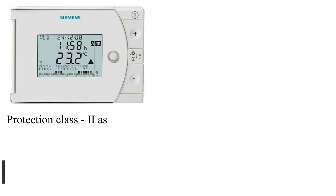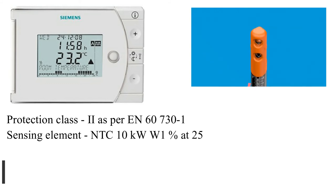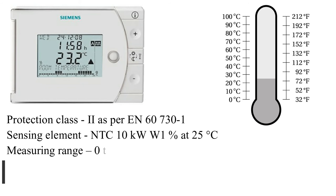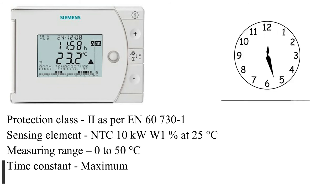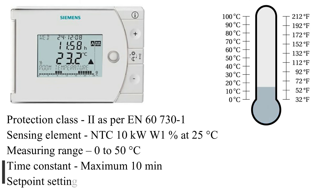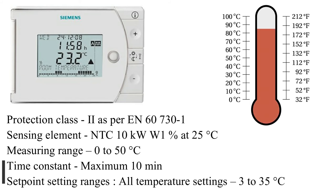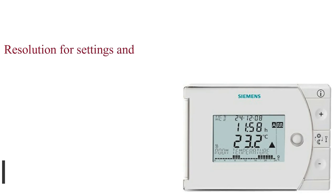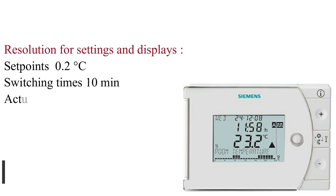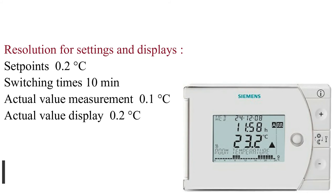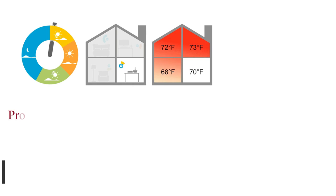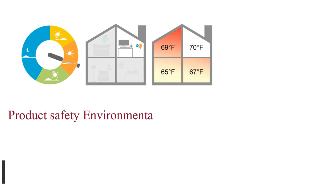Protection class 2 as per EN 60730. Sensing element: NTC 10 kilohms ±1% at 25°C. Measuring range: 0 to 50°C. Time constant: maximum 10 minutes. Set point setting ranges — all temperature settings: 3 to 35°C. Resolution for settings and display setpoints: 0.2°C. Switching times: 10 minutes. Actual value measurement: 0.1°C.